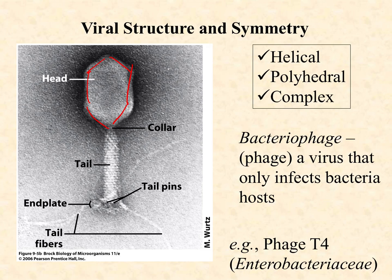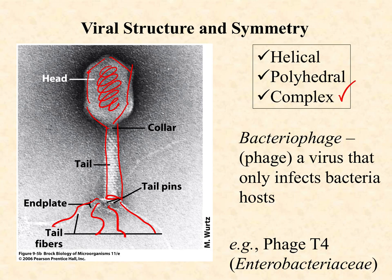The final symmetry is complex — a combination of some kind of polyhedron forming the head, where the nucleic acid is stored, plus a helical region called a tail, and then tail fibers required for attachment to the host cell. The vast majority of complex viruses are bacteriophage, and at the same time the vast majority of bacteriophage are complex. It's not a perfect 100% correlation, but it's very close. When we're talking phage, think complex symmetry. When complex symmetry comes up, your mind should immediately go to phage.